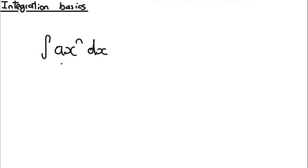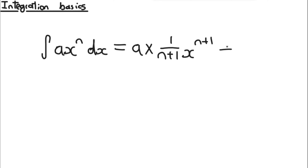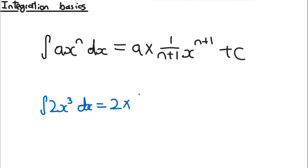If we have a coefficient at the front of x^n, it works similarly to differentiation: we just multiply whatever the integration produces by that original coefficient. So ∫ax^n dx = a · (1/(n+1)) · x^(n+1) + c. For example, ∫2x³ dx = 2 · (1/4)x⁴ = (1/2)x⁴ + c. Remember the plus c on the end.